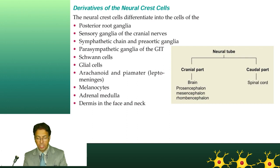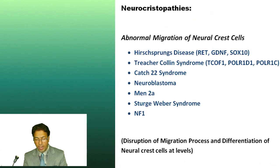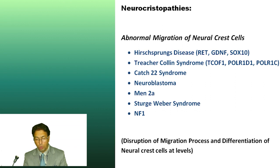It does not end there. Other elements that develop from the neural crest include the arachnoid and pia mater (the leptomeninges), sensory ganglia, the sympathetic chain, Schwann cells, glial cells, the dermis of the face and skin, odontoblasts, the C-cells of the thyroid, the conotruncal septum of the heart, and the connective tissue of the face and skull. These are all important structures which develop from the neural crest.